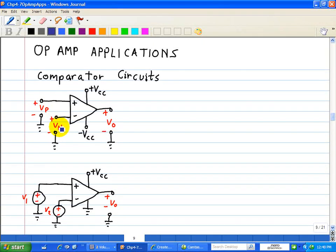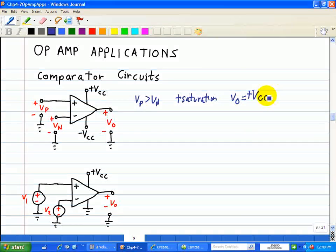Specifically, if VP is greater than VN, then the op amp is in positive saturation. That is, our output VO is equal to plus VCC, our power supply. So if this VP is greater than this VN, then our output is plus VCC. We also call this, in our example, a digital one or our high state. We also call our output VOH for high.